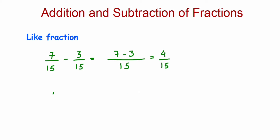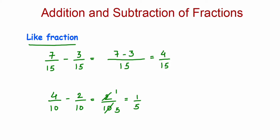One more example: 4/10 minus 2/10. Since denominators are the same, subtract the numerators to get 2/10. Cancel it — 2 ones are 2 and 2 fives are 10 — so the answer is 1/5. That covers addition and subtraction of like fractions. Now let's move on to unlike fractions.